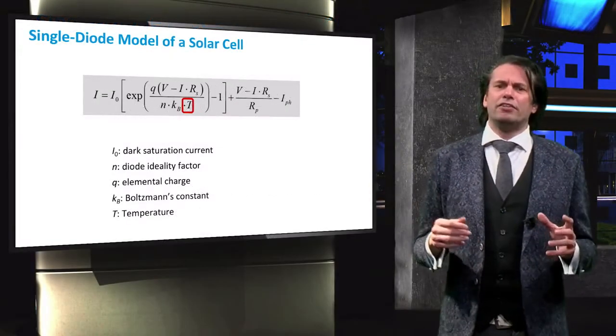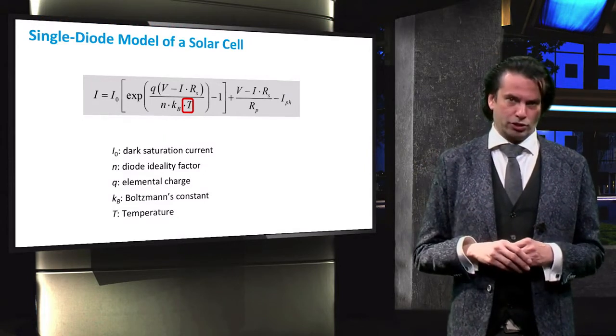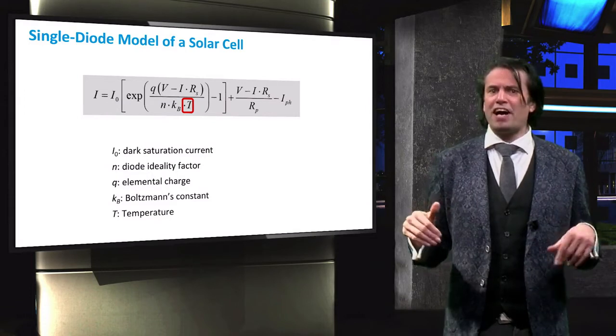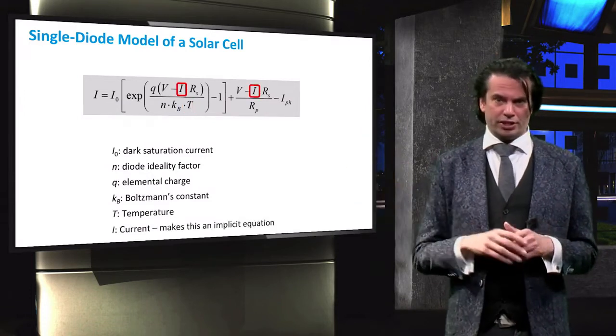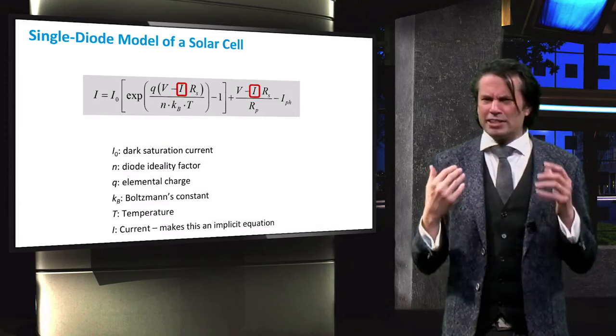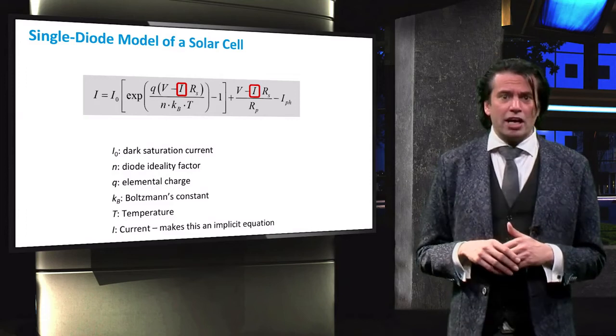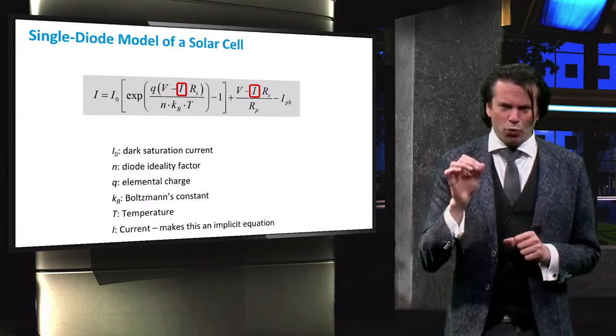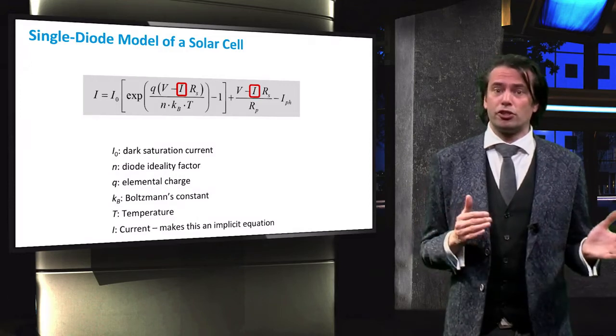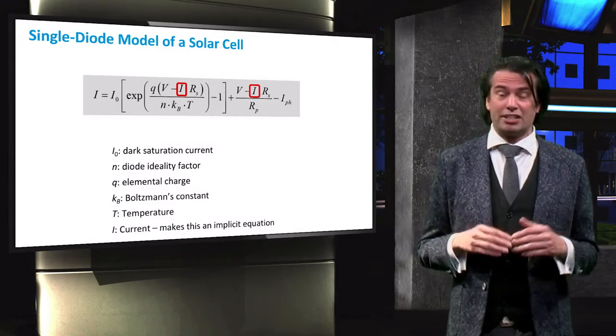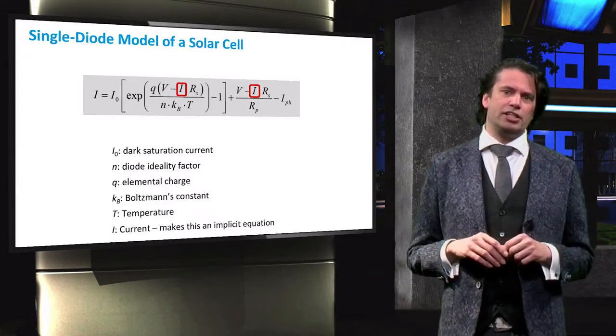Otherwise we can see the values for the photocurrent and the series and shunt resistance. However, one final interesting note is that we can find I in this equation. This makes the equation implicit, meaning that it cannot be solved algebraically. You will notice that this term only appears next to the series resistance term, so if we model the solar cell as ideal, this term would disappear and make the equation easier to solve.